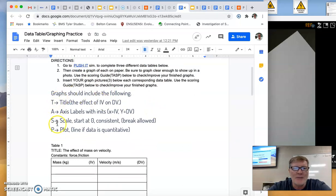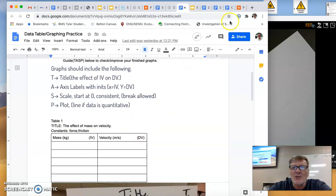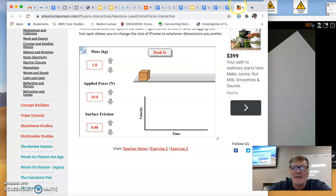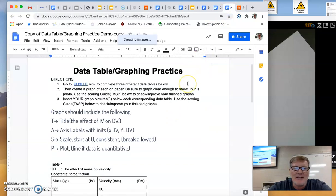A scoring guide for graphs. When you're graphing, using the scientific method as a part of a study, we have Title Axis Scale Plot. Our title is the effect of the independent variable on the dependent variable. So for down here, the effect of mass on velocity. There's my title.